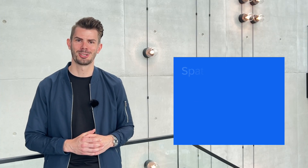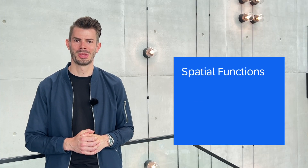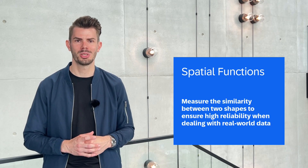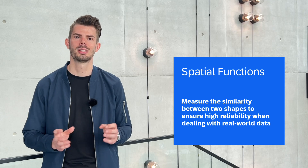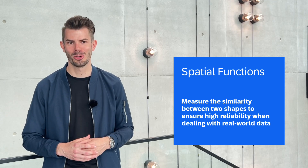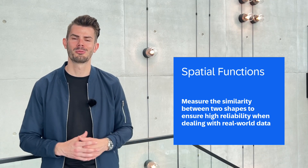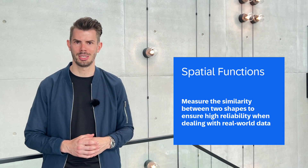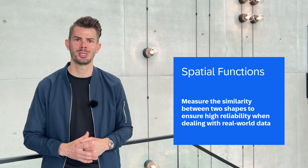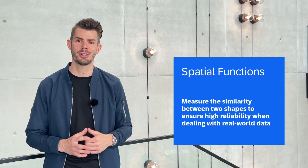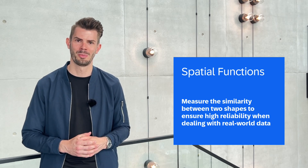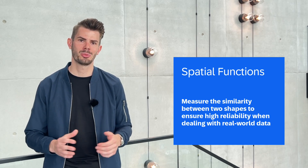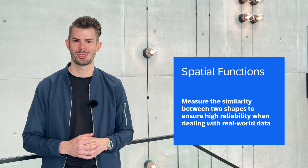Next up, we have an exciting addition to our spatial functions. The ST Hausdorff distance function allows you to measure the similarity between two sets of geographic features such as points, lines, or polygons. Real world data is often imperfect with curves, bends, and irregularities. With our new spatial function, you can analyze and compare the entire shape considering all of those little imperfections. This ensures high reliability when dealing with real world data and helps you gain deeper insight into spatial relationships.